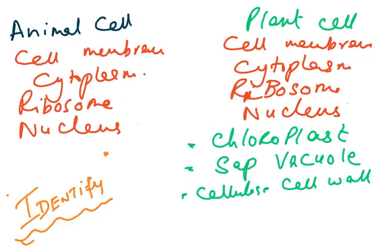The syllabus says 'identify' — so they will give you diagrams, photomicrographs, and electron micrographs and ask you to identify: cell membrane in animal and plant cells, cytoplasm, ribosome, nucleus, chloroplast, sap vacuole, and cellulose cell wall. If you can identify them in any of those types of images, you know your biology very well.